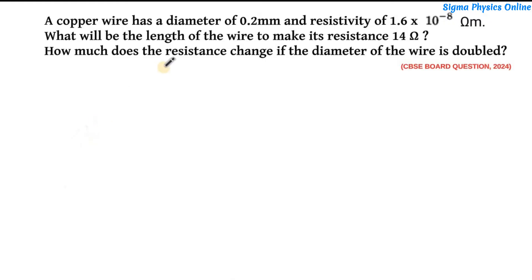Now let's solve the second part of the question: how much does the resistance change if the diameter of the wire is doubled? That means we are changing only the diameter of the wire. The length of the wire remains the same, the material of the wire remains the same, so the resistivity remains constant.